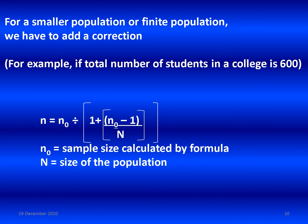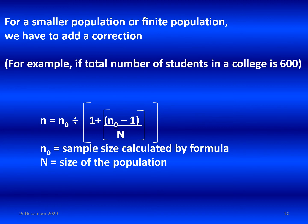Sometimes the population from which you are collecting the sample will be smaller, or a finite population. In that case, we need to apply a correction. For example, if the total number of students in a college is only 600. The corrected sample size N equals N0 divided by 1 plus (N0 minus 1) divided by capital N, where capital N is the size of the finite population.